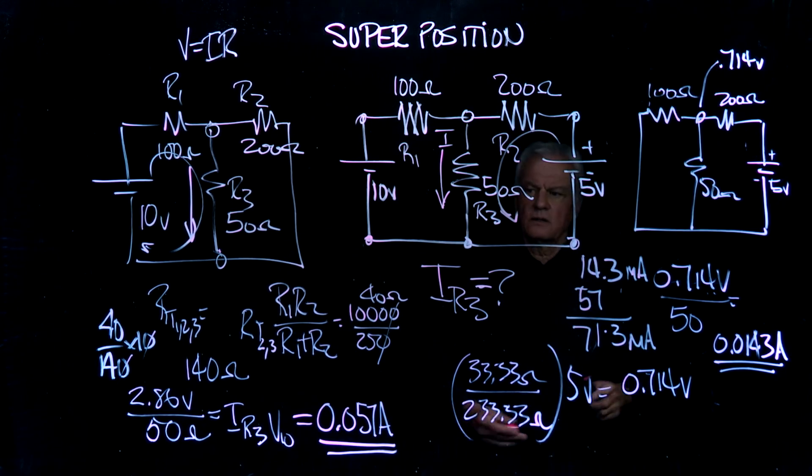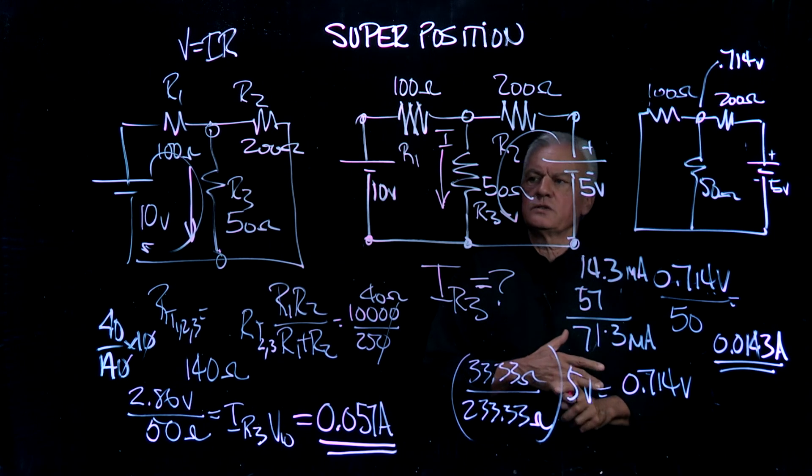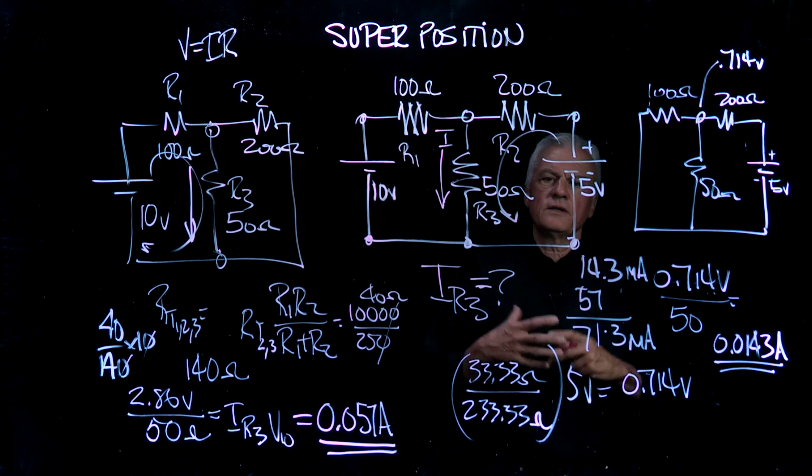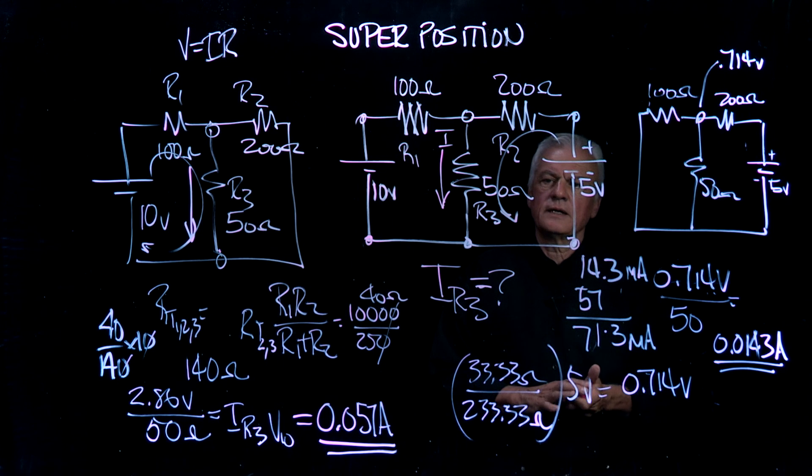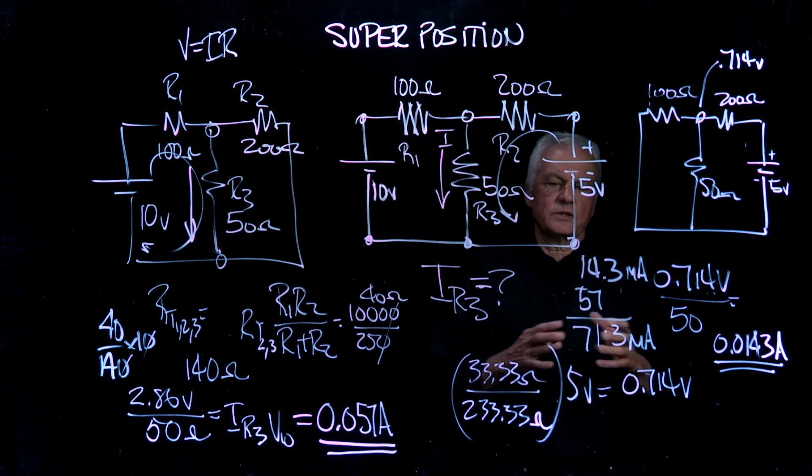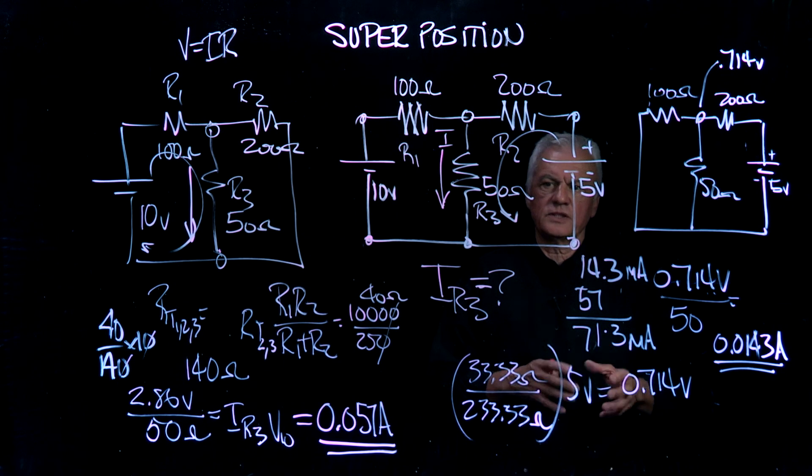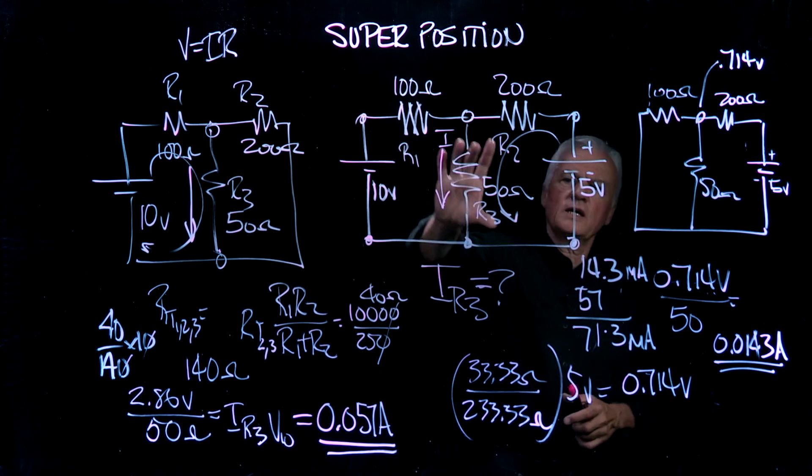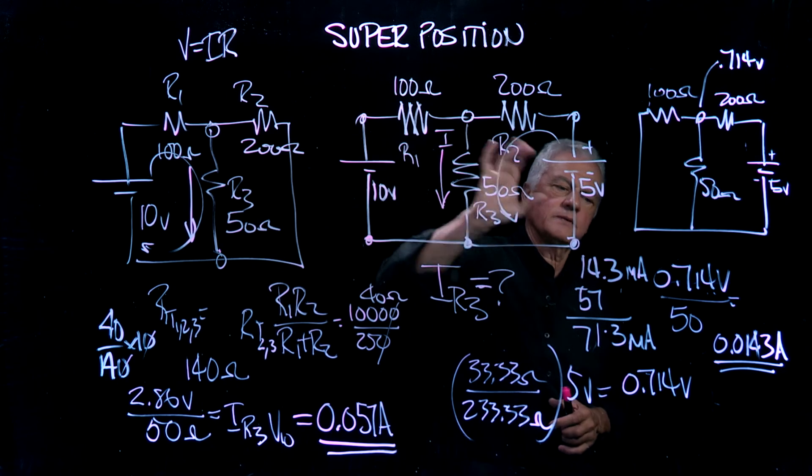Again, what we were doing was shorting voltage sources to do them independently, and then doing series parallel combinations, and also checking voltage drops across various resistors in order to see what's the resulting voltage across the resistor of interest. Thank you.